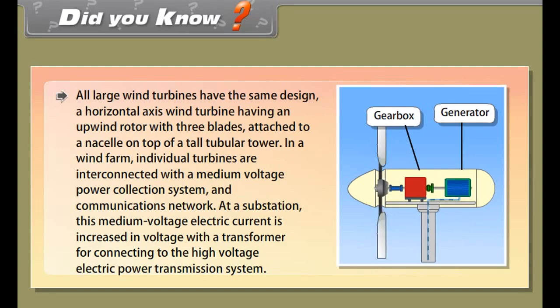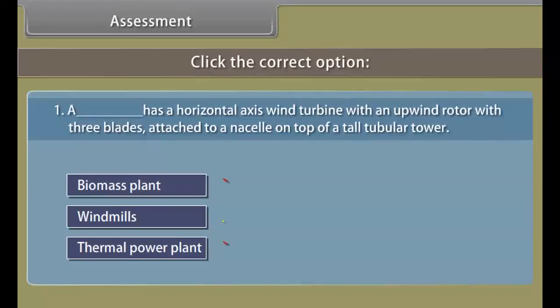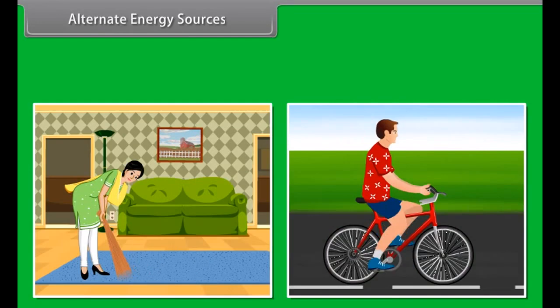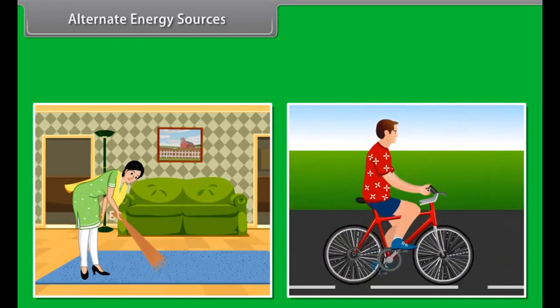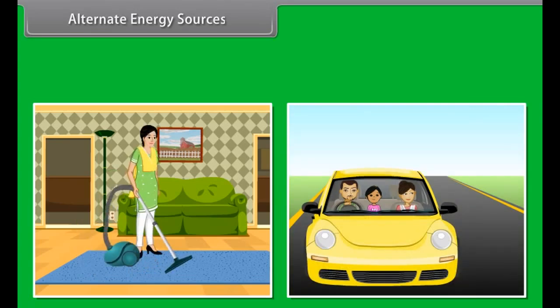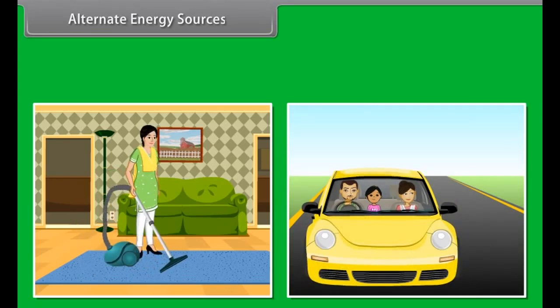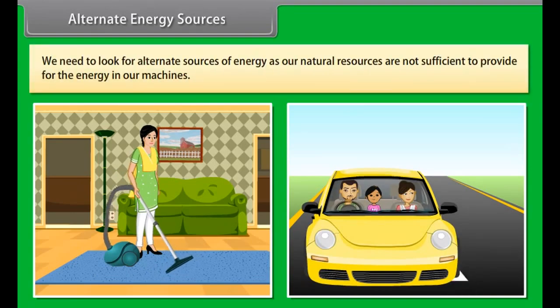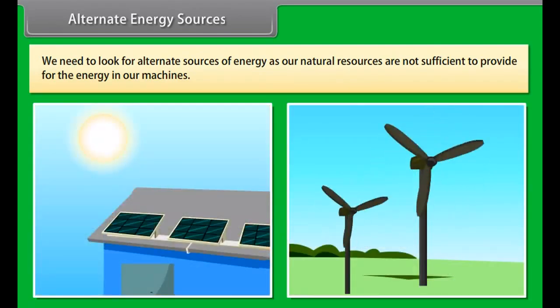Offshore wind farms harness more frequent and powerful winds than are available to land-based installations. They have less visual impact on the landscape but construction costs are considerably higher. Small onshore wind facilities provide electricity to isolated locations and utility companies increasingly buy back surplus electricity produced by small domestic wind turbines.